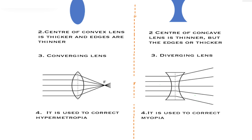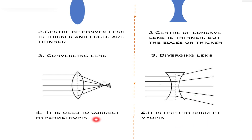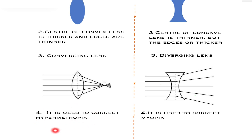Coming to the last point. Convex lens is used to correct the eye defect called hypermetropia, whereas a concave lens is used to correct the eye defect called myopia — nothing but short sightedness. Hypermetropia is long sightedness. These are the types of defects which we will be studying in detail in the coming classes, but for now you have to remember these corrections.